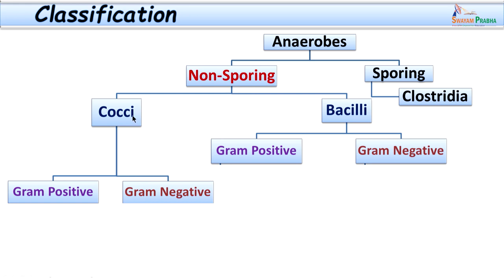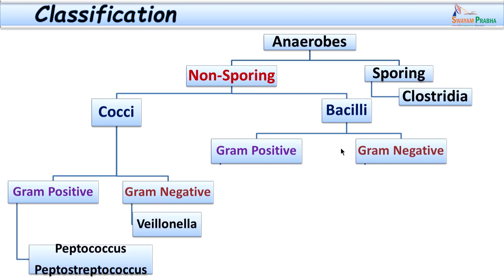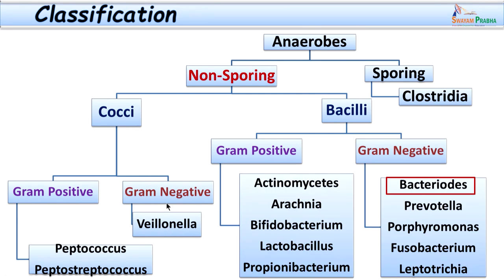Non-sporing anaerobic bacteria are basically classified into cocci and bacilli, further classified into gram-positive and gram-negative. Among the gram-positive cocci, the important species are Peptococcus and Peptostreptococcus. Among gram-negative cocci, Veillonella. Coming to bacilli, which are the most common cause of non-sporing anaerobic bacterial infections — gram-positive ones include Actinomyces, Arachnia, Bifidobacterium, Lactobacillus, and Propionibacterium.